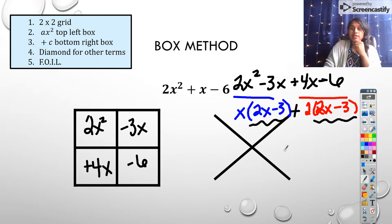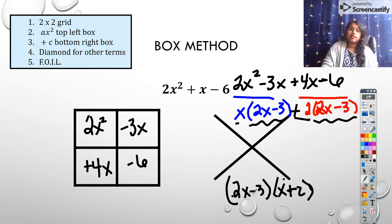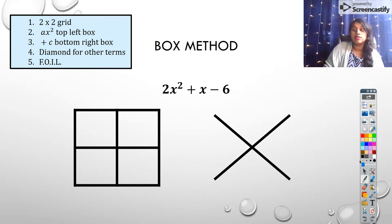2x minus 3. So I pull that 2x minus 3 to the outside, and what I'm left with is an x, so that x comes down, and a plus 2, so that plus 2 comes down. And of course, I would foil back to check. 2x times x is 2x squared. 2x times the outer is 4x. Negative 3 times x is negative 3x, so that's our inner that combines to positive 1. And then I multiply the last two, and that gives me a negative 6, so that is our correct answer.